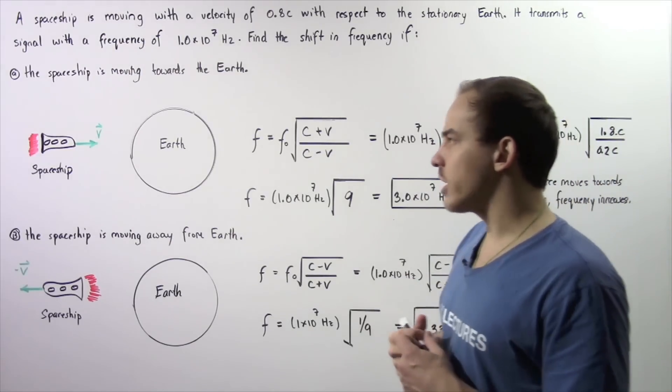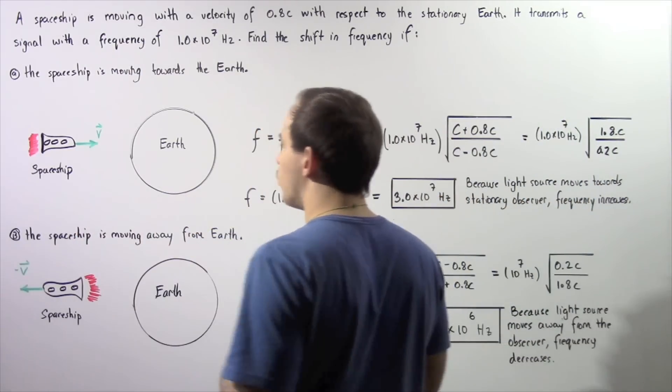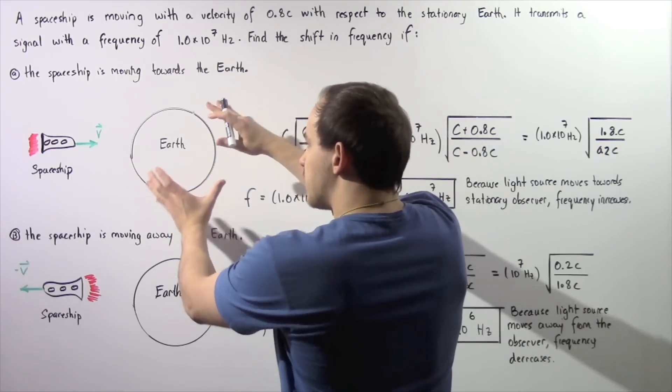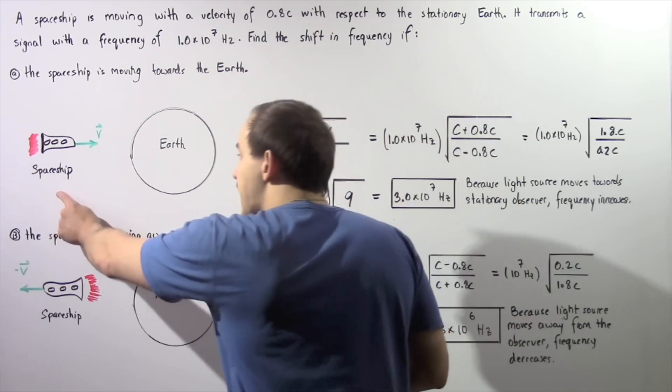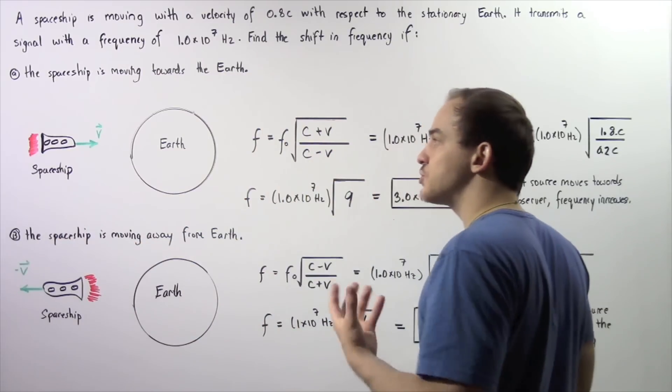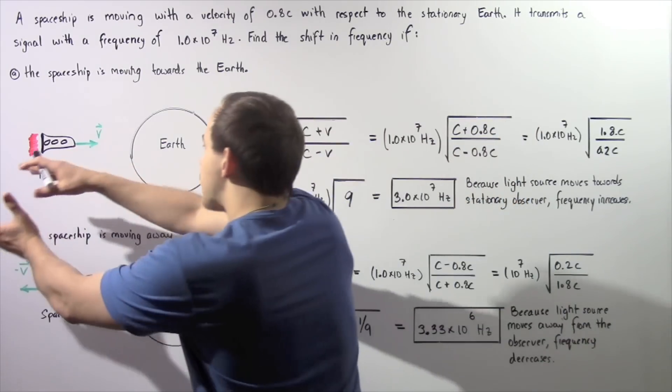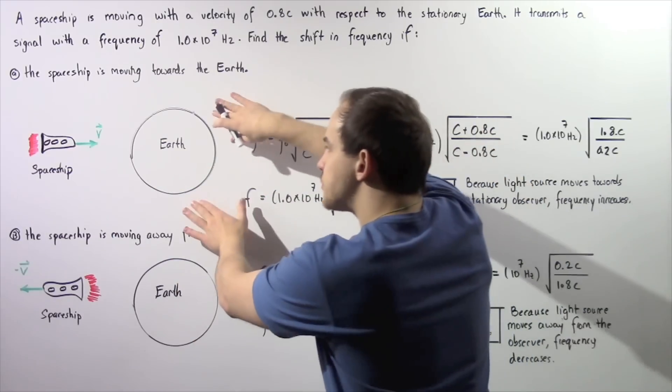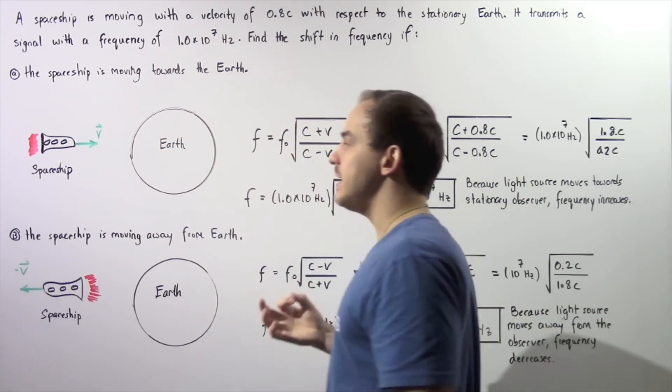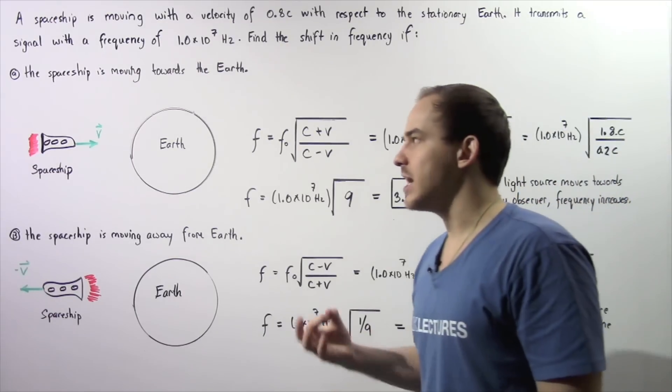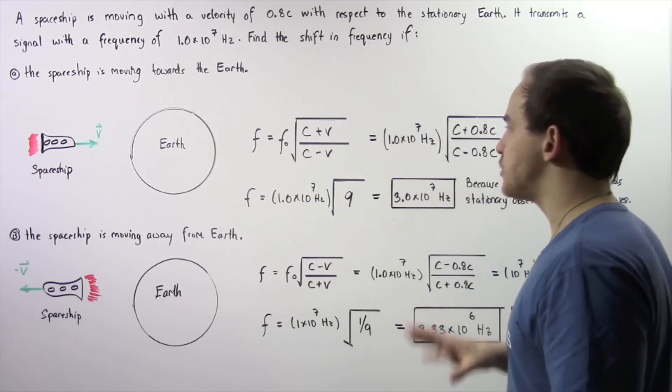Let's begin with part A by looking at the following diagram. We have the stationary Earth, our stationary observer, and the spaceship, which is basically the source of light, is traveling towards the observer with a velocity v. So velocity v represents the relative velocity of our spaceship.